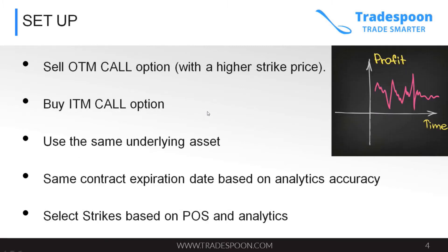Let's talk about setup. You sell an out-of-the-money call option with a higher strike price. You buy an in-the-money call option with the lowest strike price, because you have a bullish bias for the underlying asset. You use the same underlying asset and same contract expiration. You want to take the expiration date that gives you the highest chance of success. At TradeSpoon, our analytics predict price movements from 1 to 50 days, but based on our research, the best duration for option contracts is anywhere from 50 to 75 days until expiration, because that gives you more time to be correct on your bias for the stock.